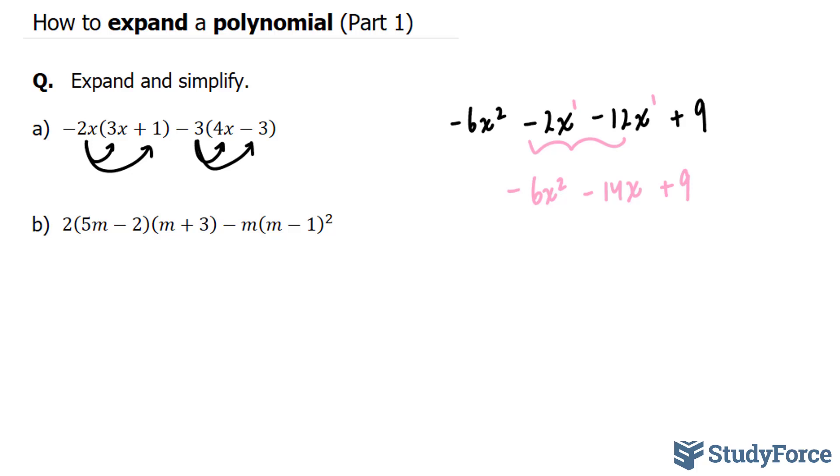Let's use the same method now for question B. Here we're asked to expand this polynomial. And this polynomial is a lot more complicated than the previous one. Notice that we have 2 multiplied to two sets of brackets and we have this negative m multiplied to this expression that is raised to the power of 2.